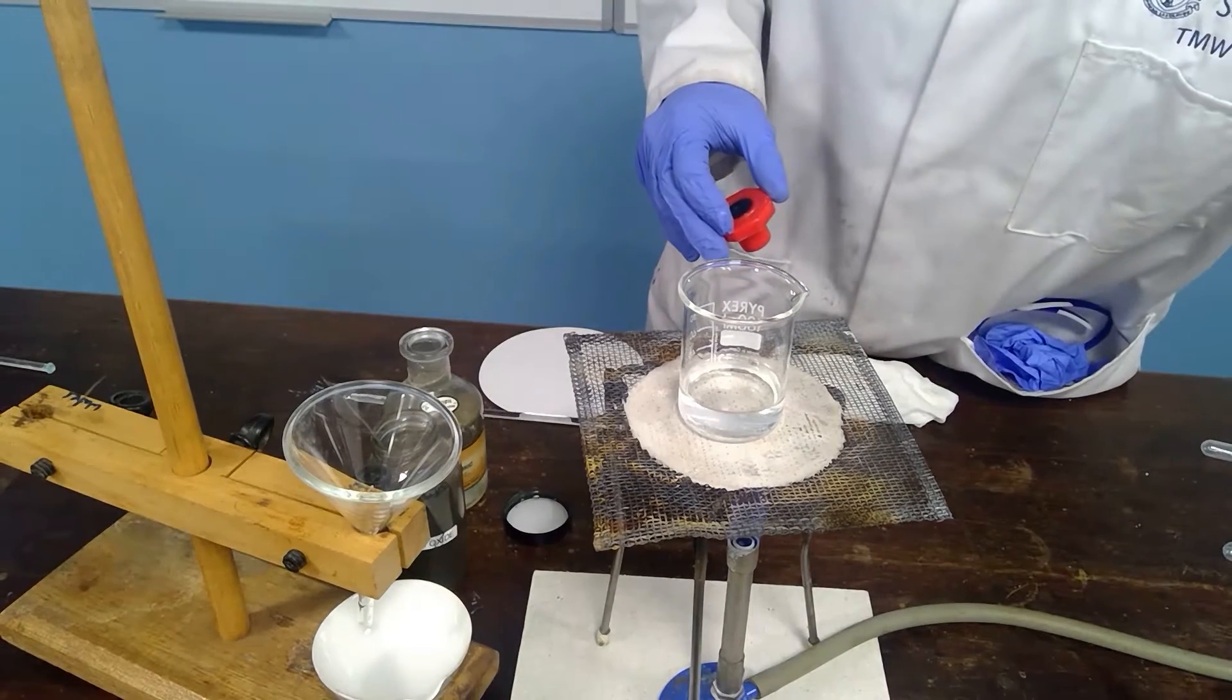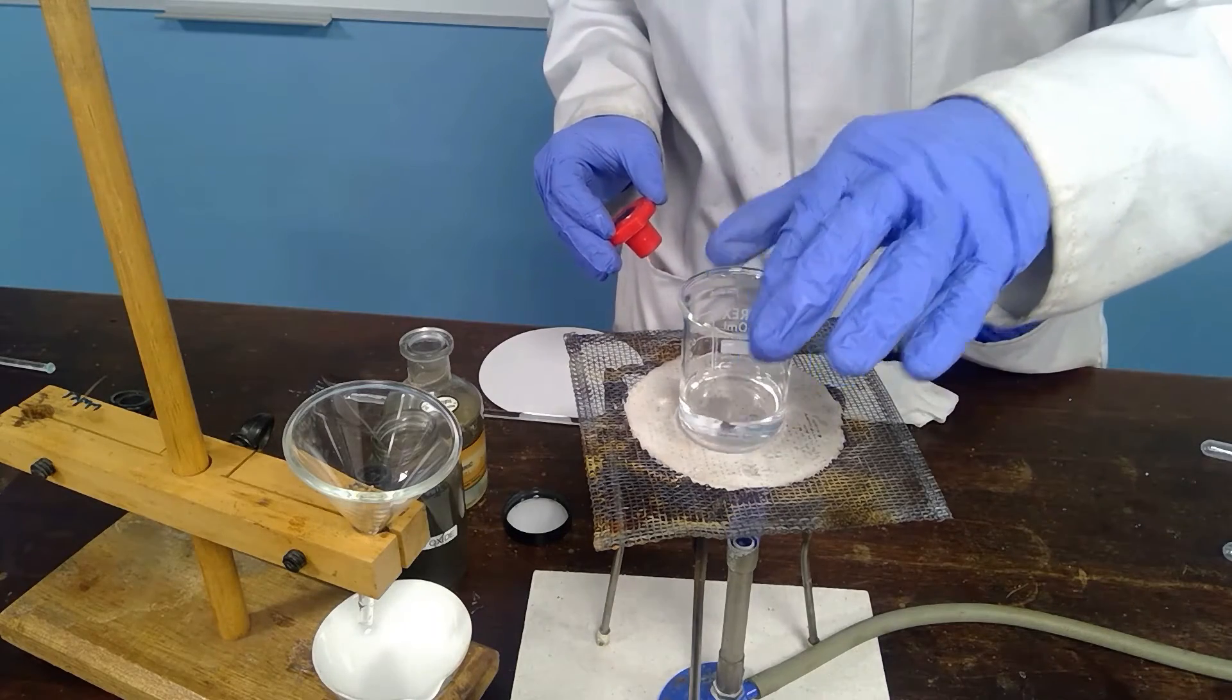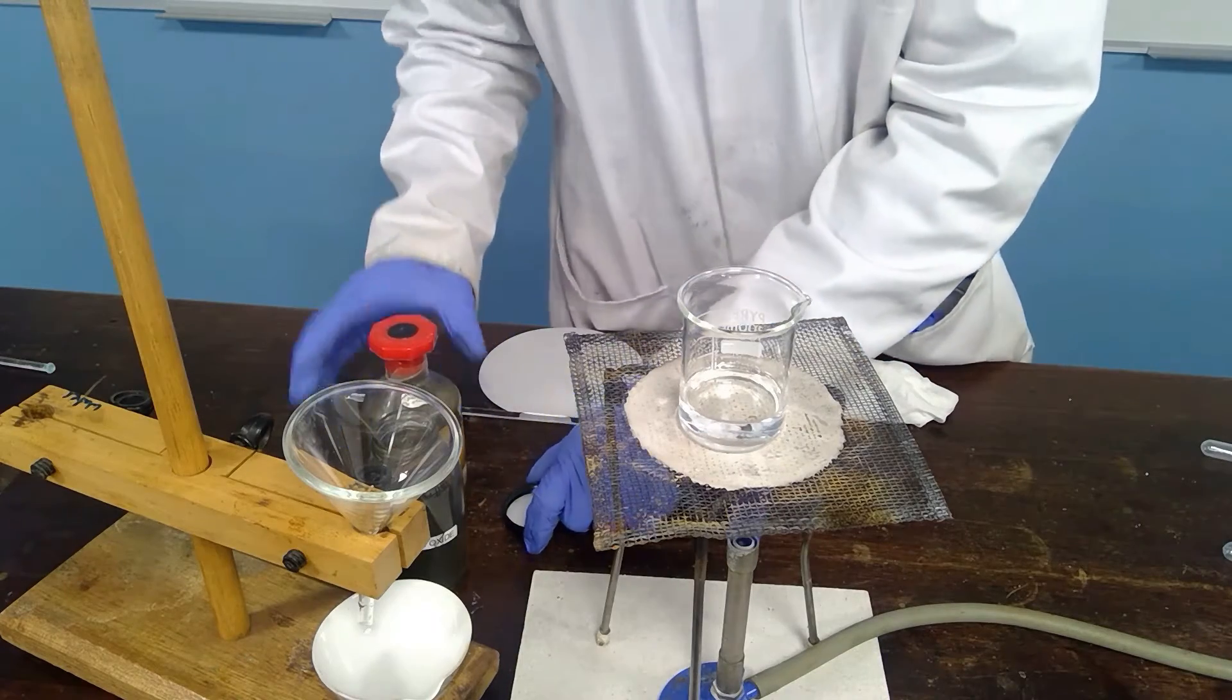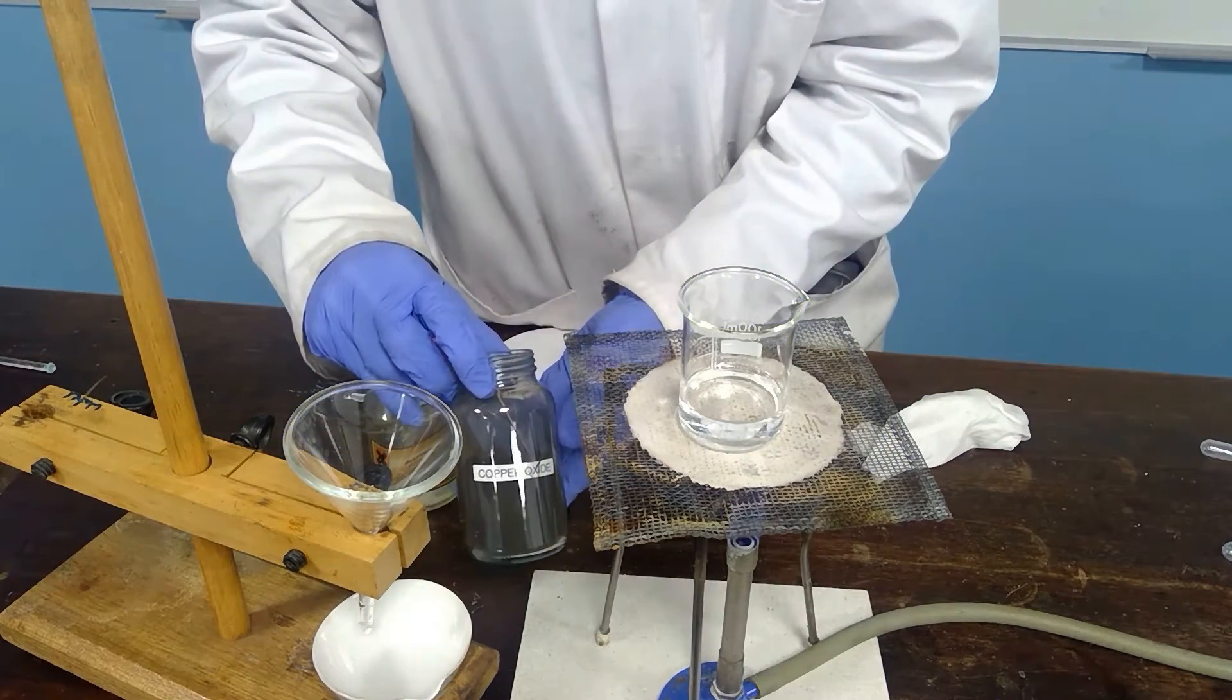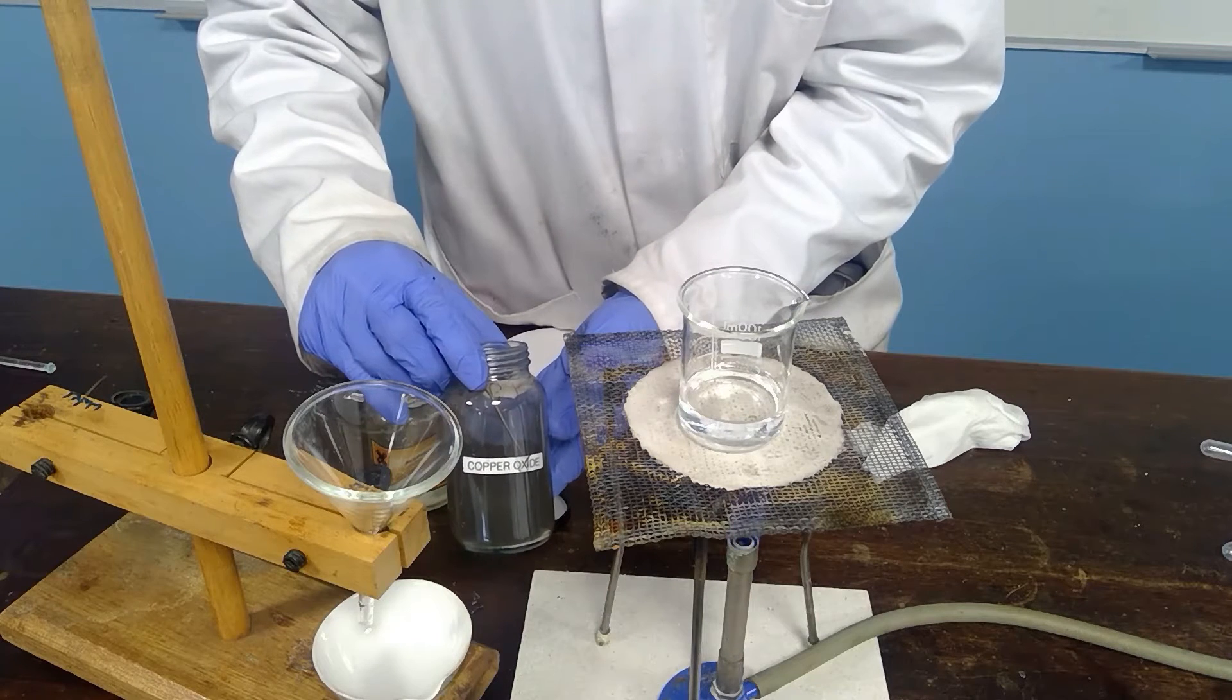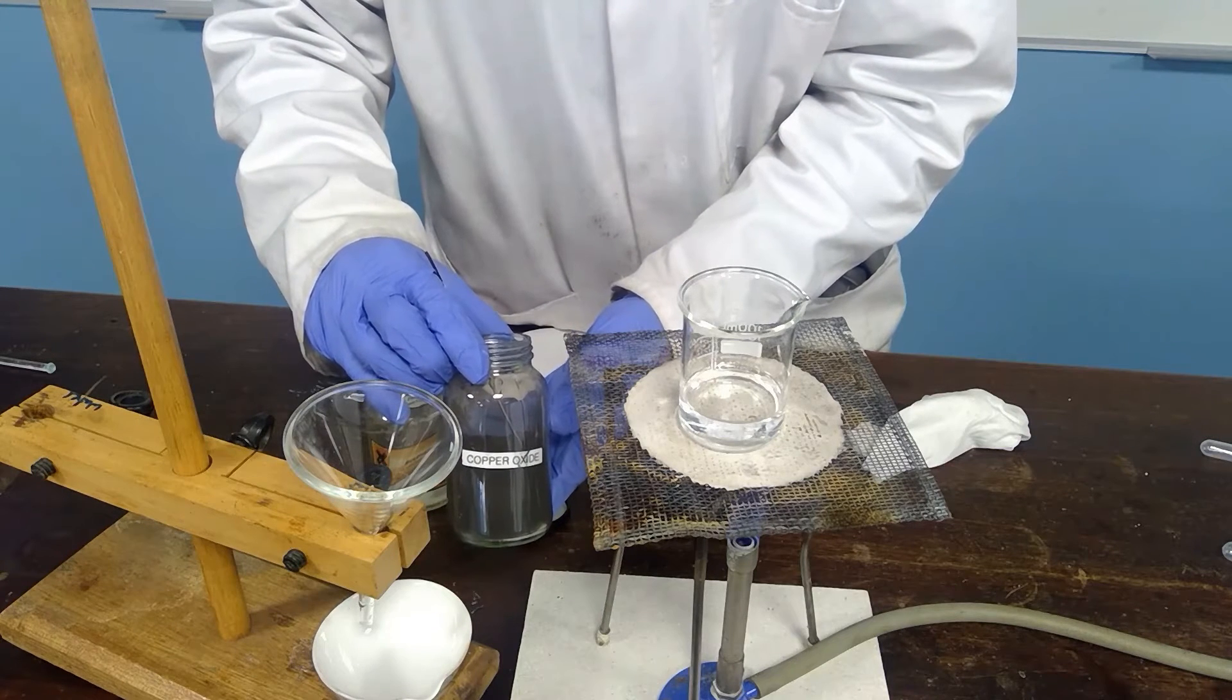We will warm the sulfuric acid first of all so we have got hot acid in the 100 cm cubed beaker. We're going to add to this copper oxide which is a black solid. It is insoluble in water but it does react with the sulfuric acid to form copper sulfate and water.